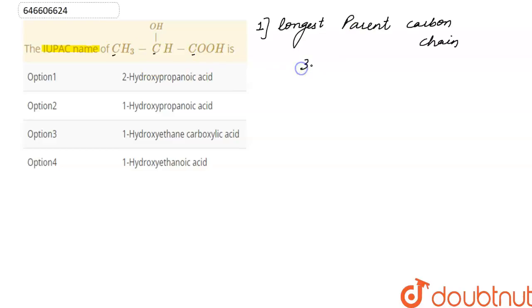To denote three carbon atoms, the word root is propane. Now we have two functional groups: one is alcohol, another is carboxylic acid. As carboxylic acid has more priority than OH, so OH is a substituent in this given compound.